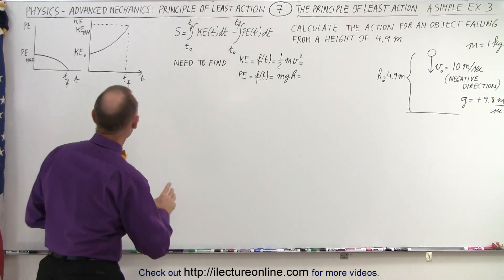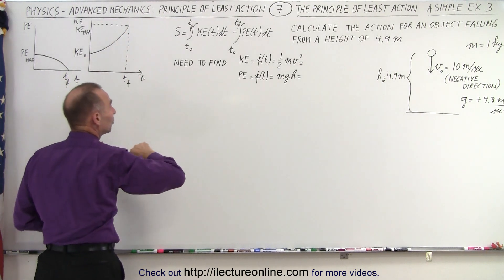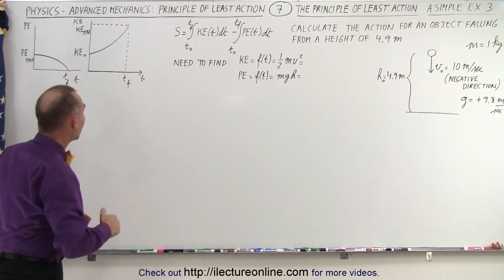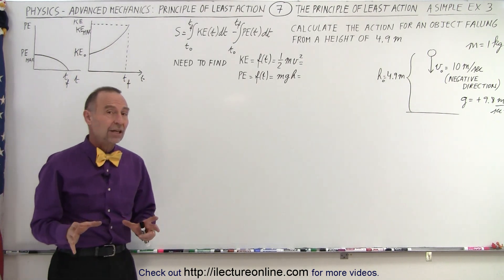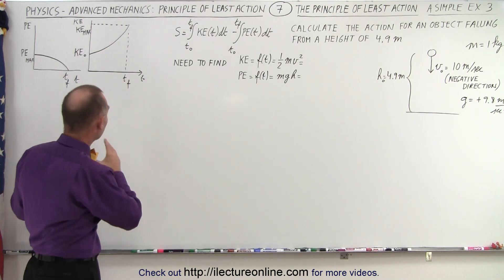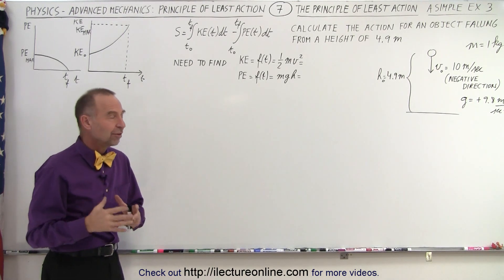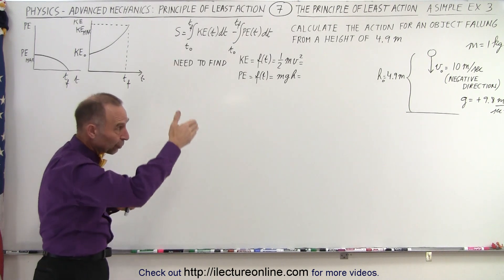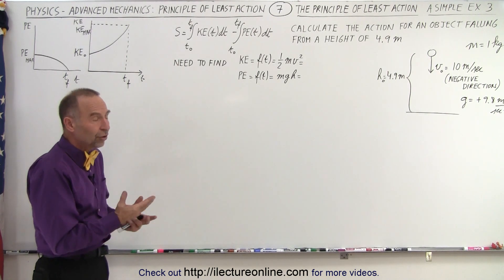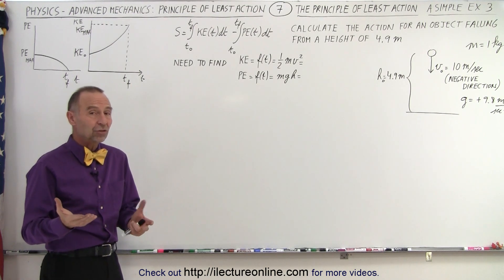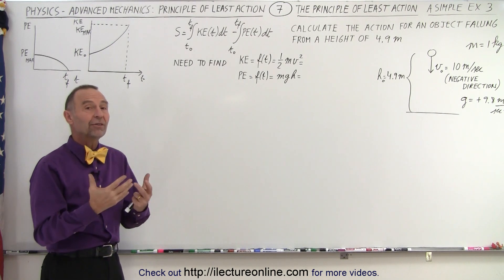Now notice that we already start with some initial kinetic energy, and then the kinetic energy increases as it goes down and picks up speed. The potential energy will be the same as before, but you can see now that the average kinetic energy appears to be bigger than the average potential energy, and in this case we expect the action to be a positive quantity. Nevertheless, for the path going straight down, that is going to be the path of least action. The path of least action can be a negative value, like we saw in the previous videos, or it can be a positive value.